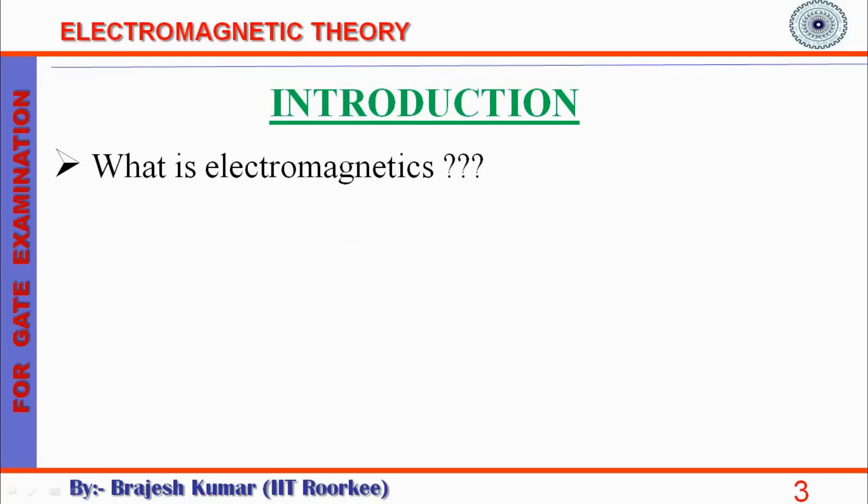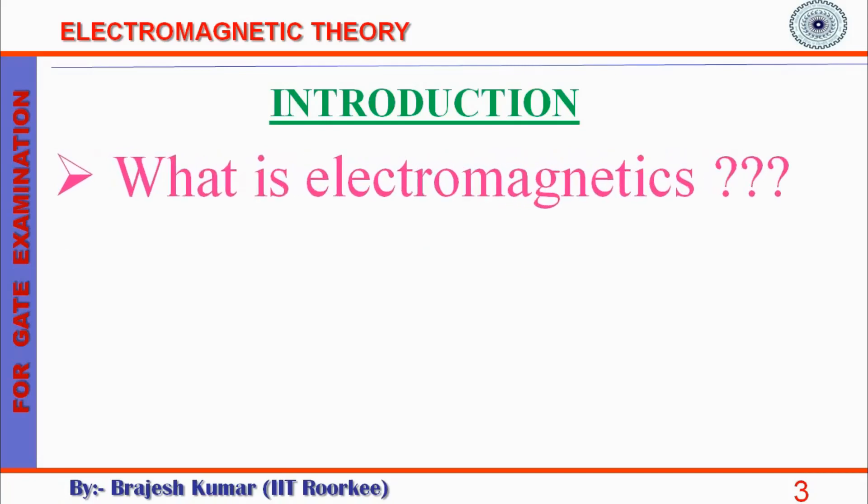At the very beginning one may ask certain question like what is Electromagnetics? Well, let me answer it. Electromagnetic is basically the subject dealing with Electromagnetic fields. An Electromagnetic field is made of interdependent electric and magnetic fields which is the case when fields vary with time.